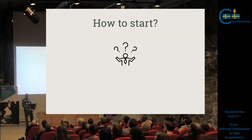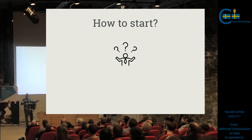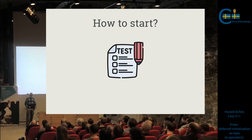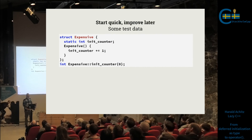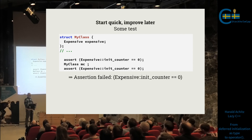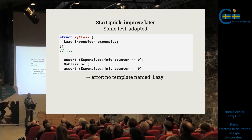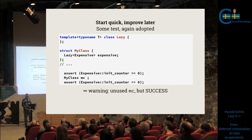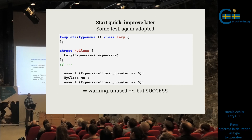Let's start with a super quick implementation. How do we start implementations? We start of course with testing. We have our expensive type — for testing I have just an initialization counter, and whenever I initialize it, it increments. It should never be higher than one. I make my first test and it doesn't work, but that's expected. So I want to have the lazy type — let's add it. We add the template, compile, run, and the test succeeds.